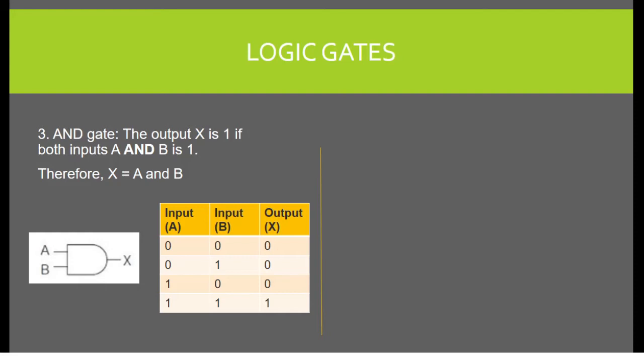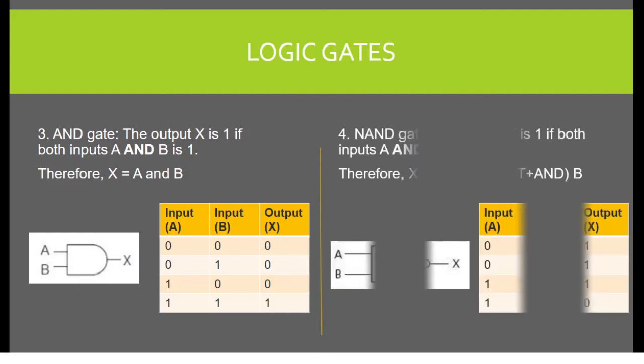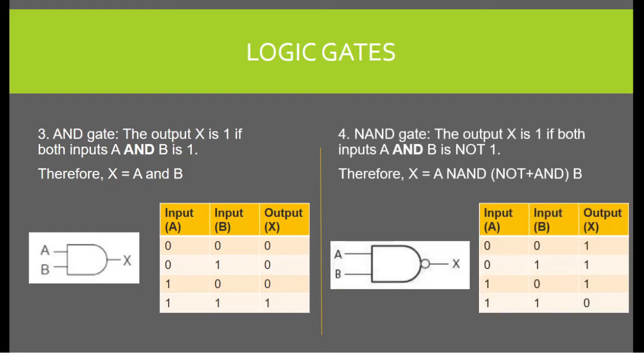NAND gate. The output X is 1 if both inputs A and B is NOT 1. Therefore, X equals A NAND B. So when the inputs are 1 and 1, the output is 0. Other than that, the output will always be 1.